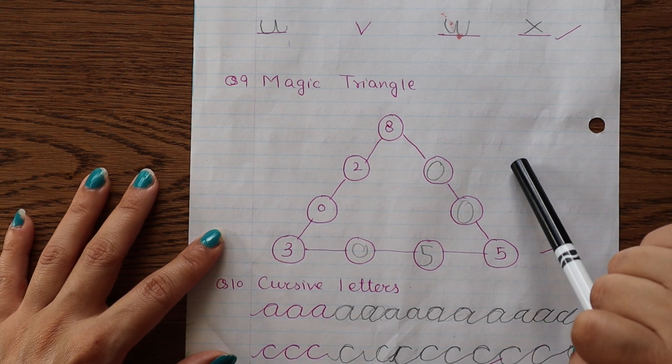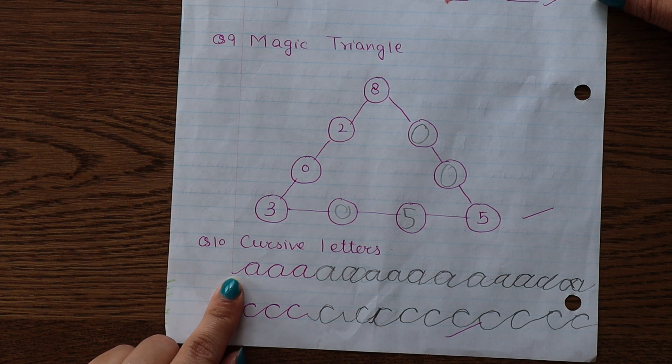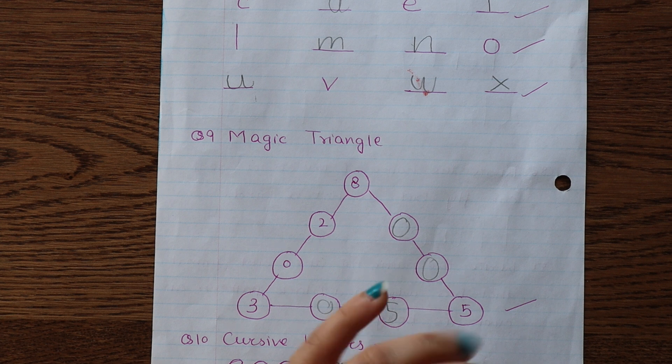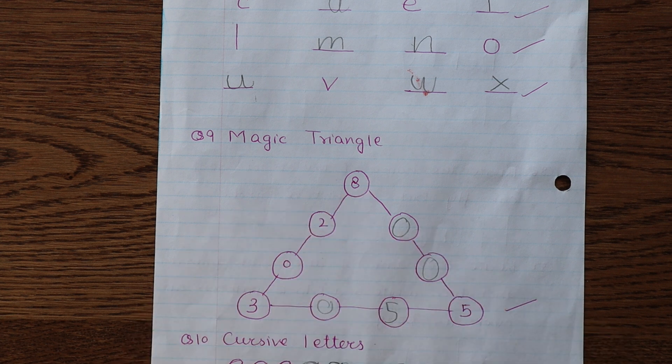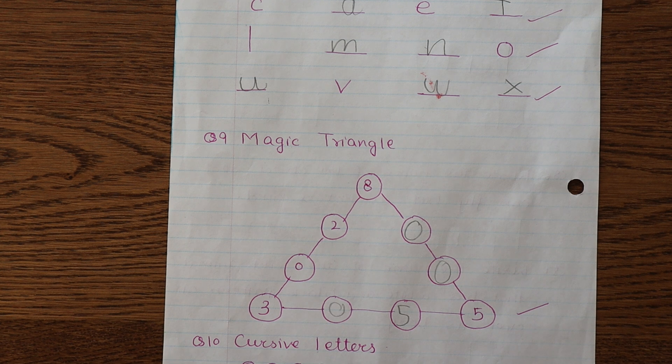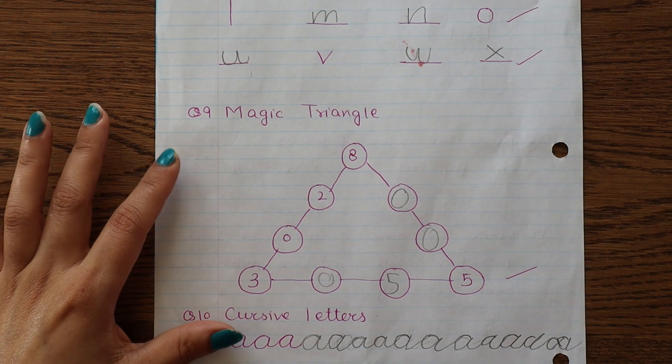Next we have magic triangles. Below this we have cursive letter writing practice, letter A and letter C. Along with these activities, I always make sure to give her one or two drawing or coloring worksheets every day. Drawing or coloring activities are great for their logical thinking and to encourage their imagination. So I'll highly suggest to include drawing or coloring worksheet in child's daily practice worksheets.